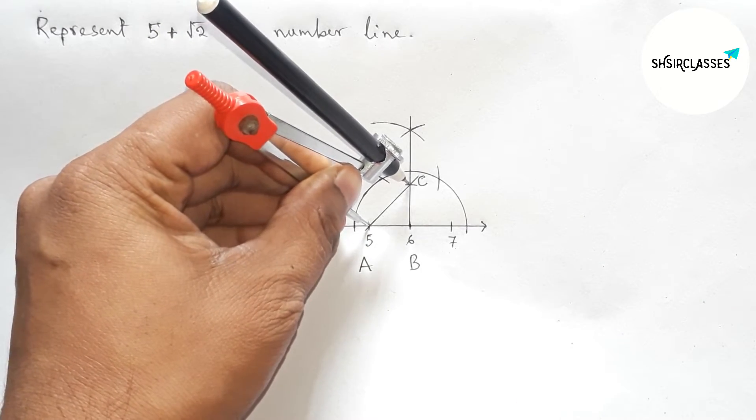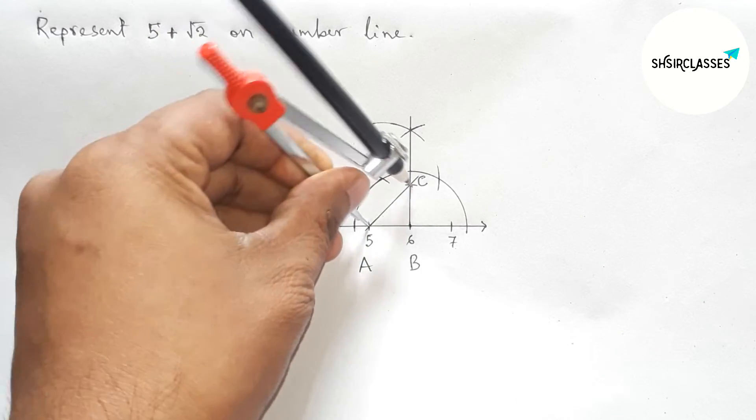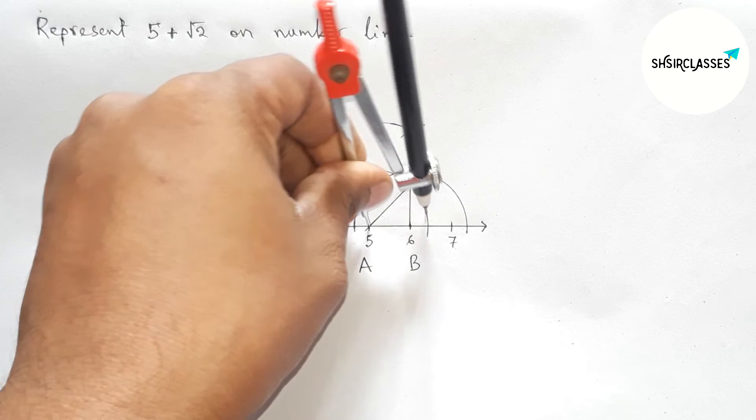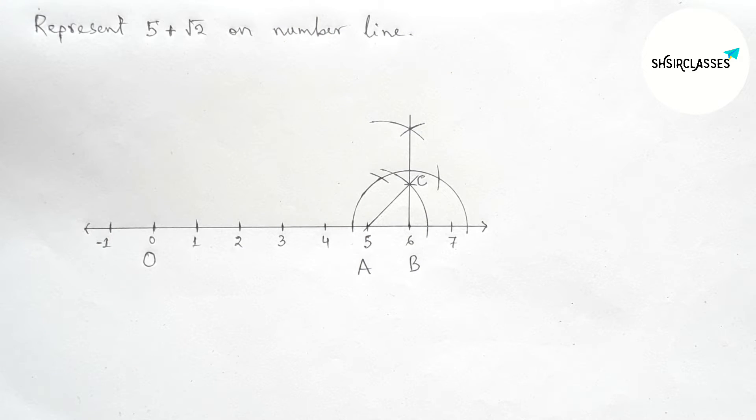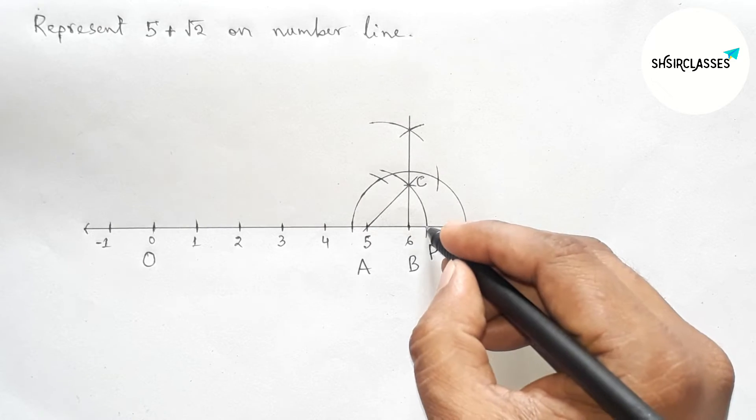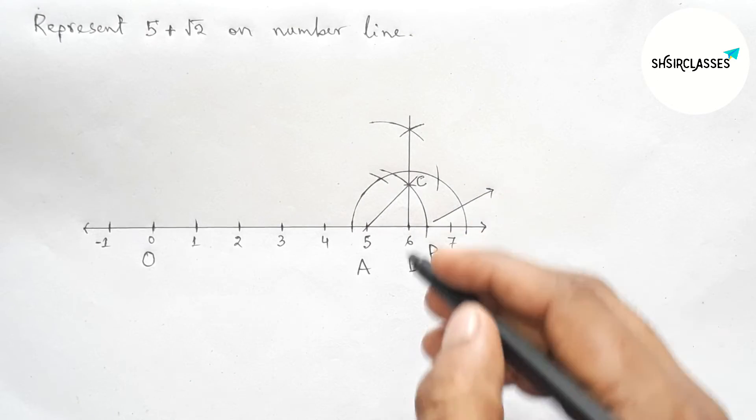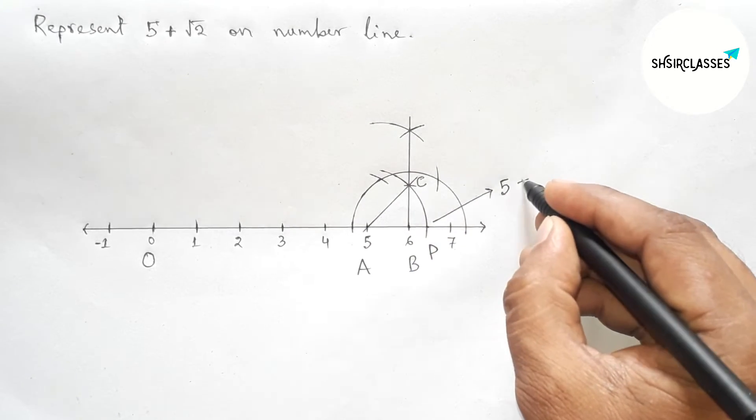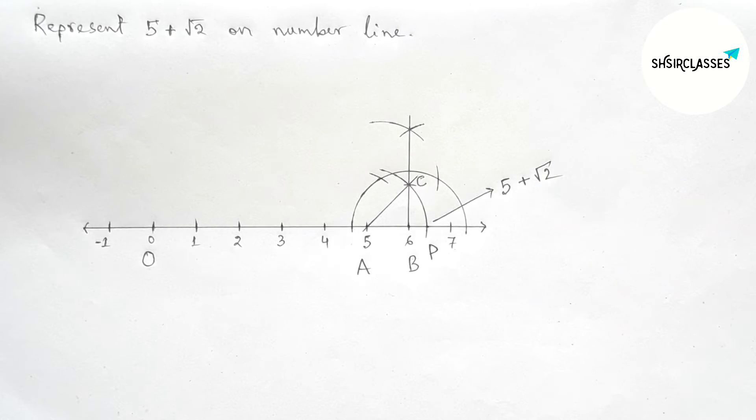Perfect. Now drawing an arc which meets the number line here at a point, taking point P, and this is 5 plus root 2 on number line.